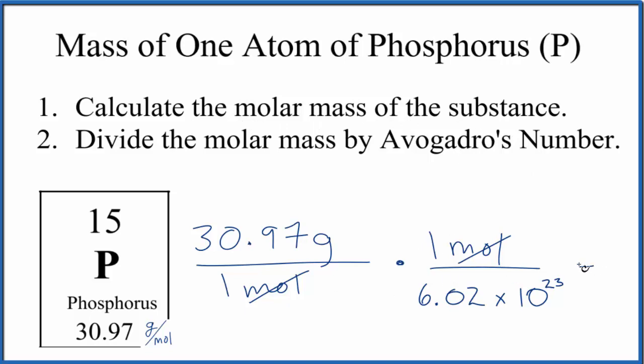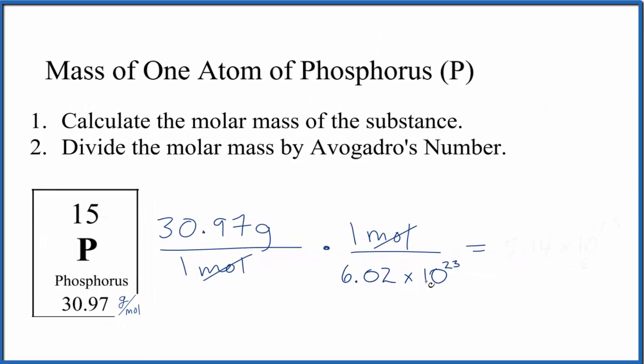When we do the math - 30.97 divided by 6.02 times 10 to the 23rd - we get 5.14 times 10 to the negative 23rd grams. If you wanted this in kilograms, you could divide by a thousand to get 5.14 times 10 to the minus 26 kilograms.